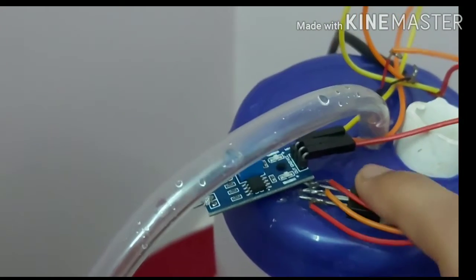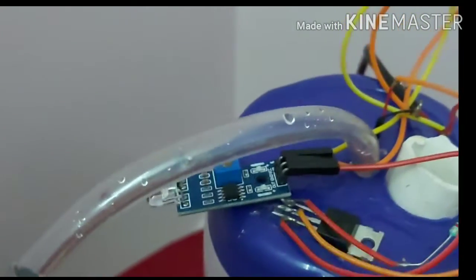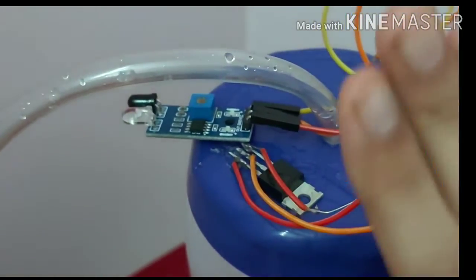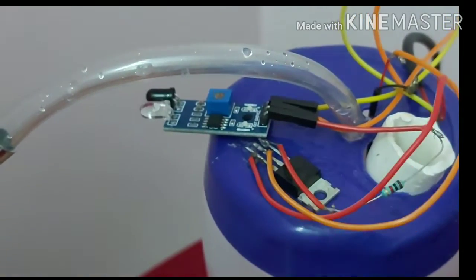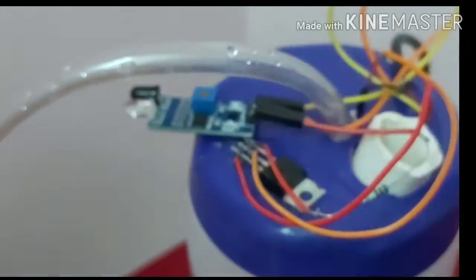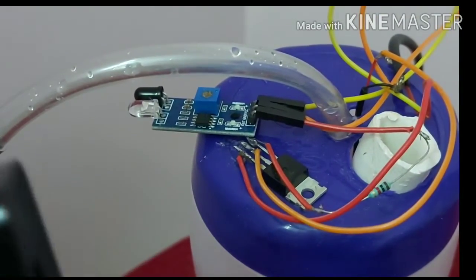This is our TIP32C PNP transistor. This is our 1k ohm resistor and these are all the connections. This is my USB cable, this is my 5 volt adapter through which we have to connect.